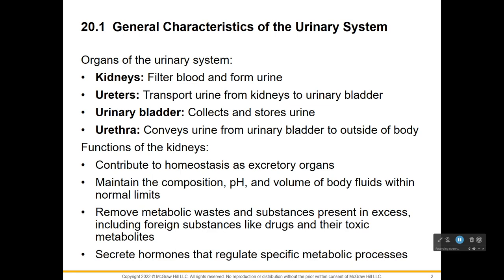The organs of the urinary system include the kidneys, the ureters which take urine made by the kidneys to the urinary bladder, and the urinary bladder which — like the gallbladder — is just for storage. It doesn't make anything; it's just a storage sack.